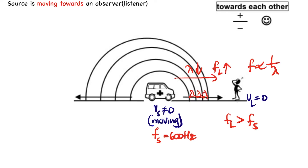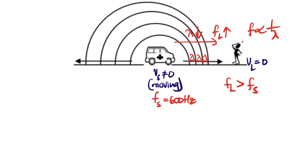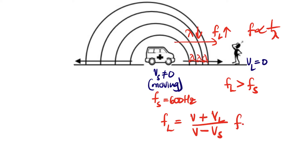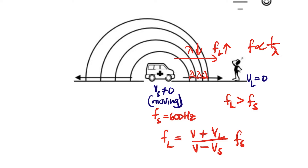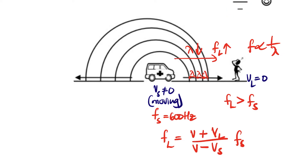The formula when they move towards each other — whether the source or listener is moving towards the other — is: frequency of the listener equals (V plus velocity of the listener) divided by (V minus velocity of the source), multiplied by the frequency of the source. When moving towards each other, there is a plus in the numerator and a negative in the denominator. Always, when it's towards, use this formula — plus on top and negative below.